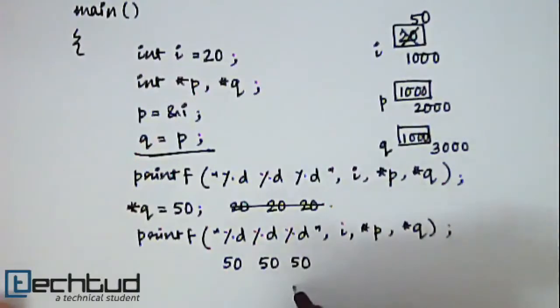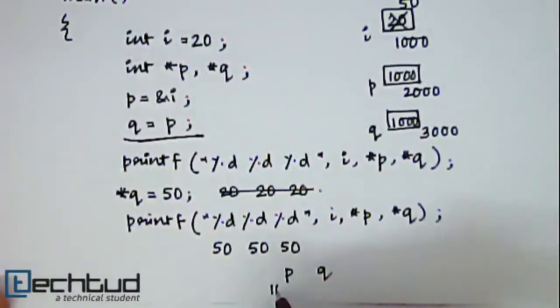And if you print the value of P or Q, P will give you 1000, Q will also give you 1000.